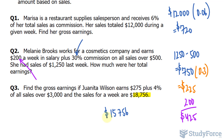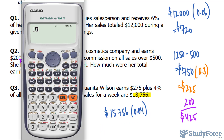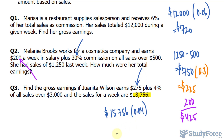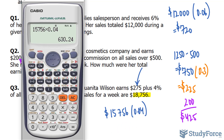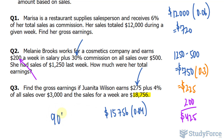$15,756 is the amount on which she earns commission, and the rate is 4%, which is 0.04 as a decimal. So $15,756 times 0.04 gives the commission amount, and we add her salary of $275 onto this. Juanita earns $905.24 — that is her gross earnings.